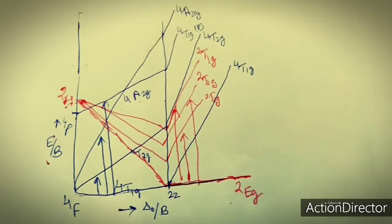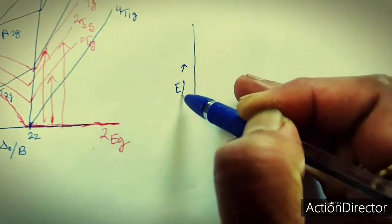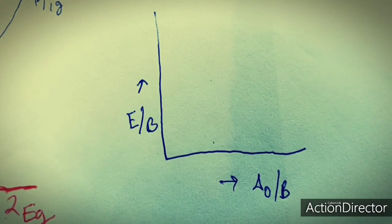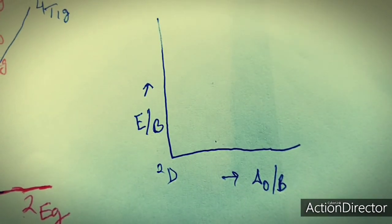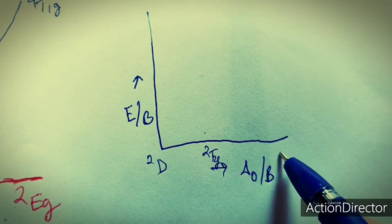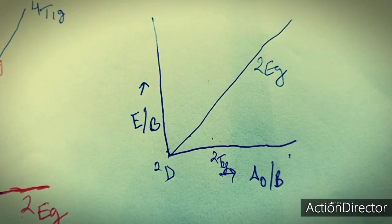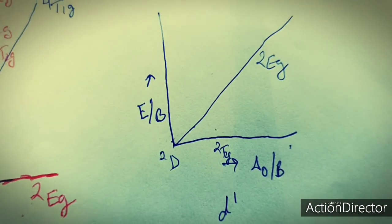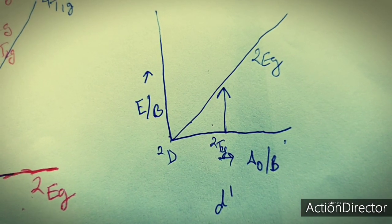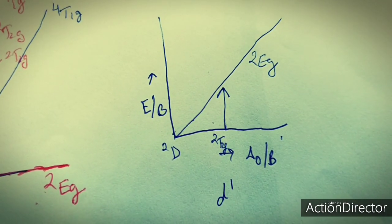For simpler configurations, we draw like an Orgel diagram, plotting E/B versus ΔO/B. For example, the Tanabe-Sugano diagram of D1 configuration: the ground state atomic term is 2D, generating the Mulliken term 2T2G as the octahedral ground state. This is shown as a horizontal line, and the excited state is 2EG. For D1 configuration there is only one possible transition for both weak and strong field. Simple drawing makes the Tanabe-Sugano diagram straightforward for any given configuration.